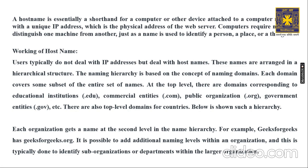Each domain covers some subset of the entire set of names. At the top level there are domains corresponding to educational institutions like .edu, commercial entities like .com — for example yahoo.com, amazon.com — public organizations like .org, and government entities like .gov.